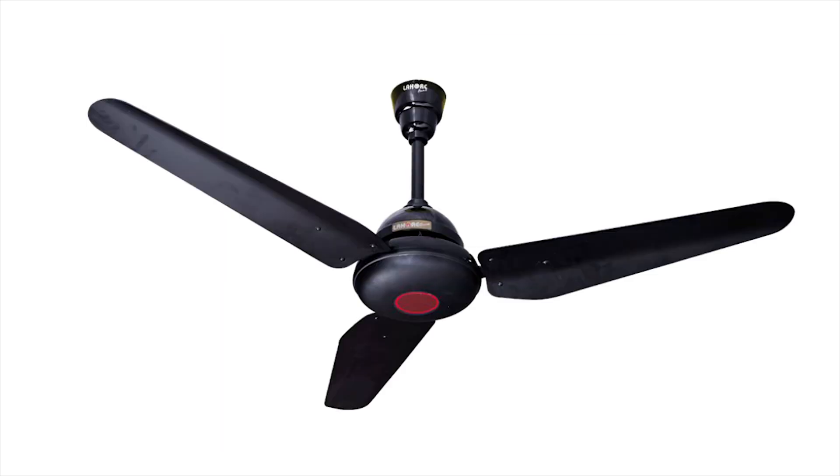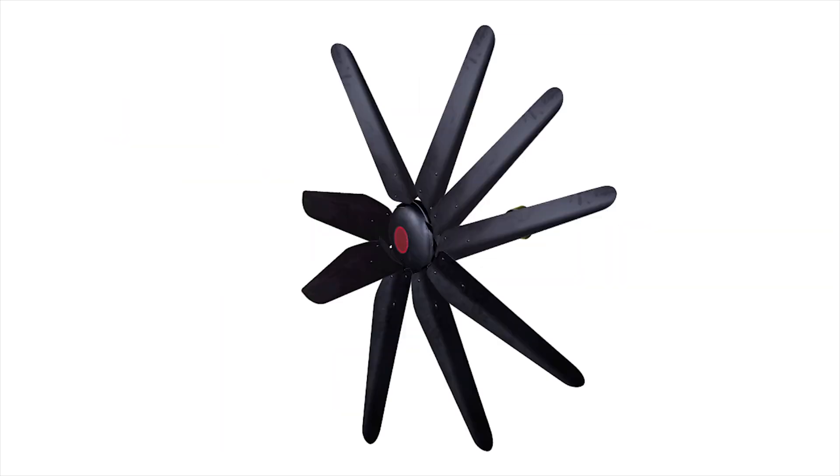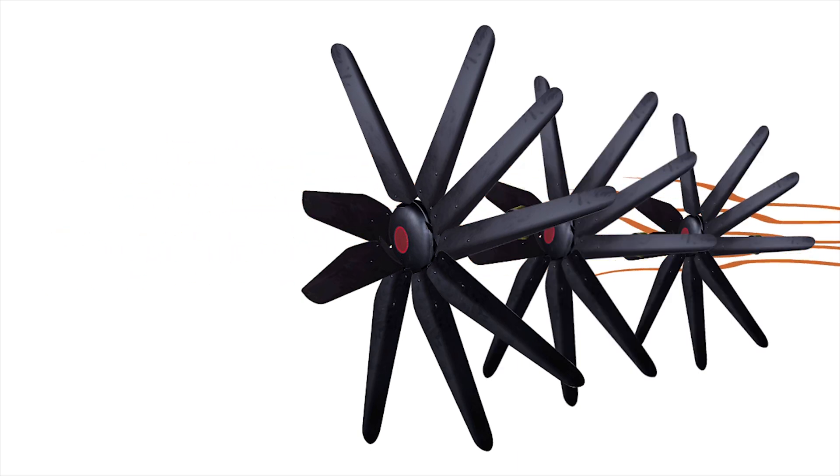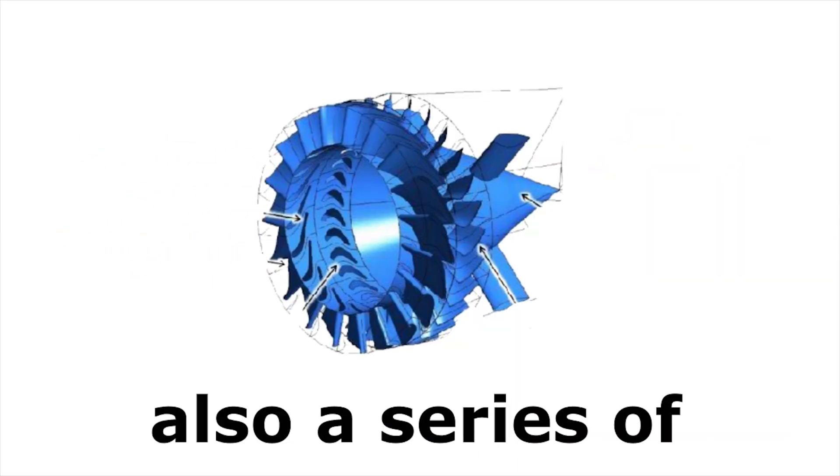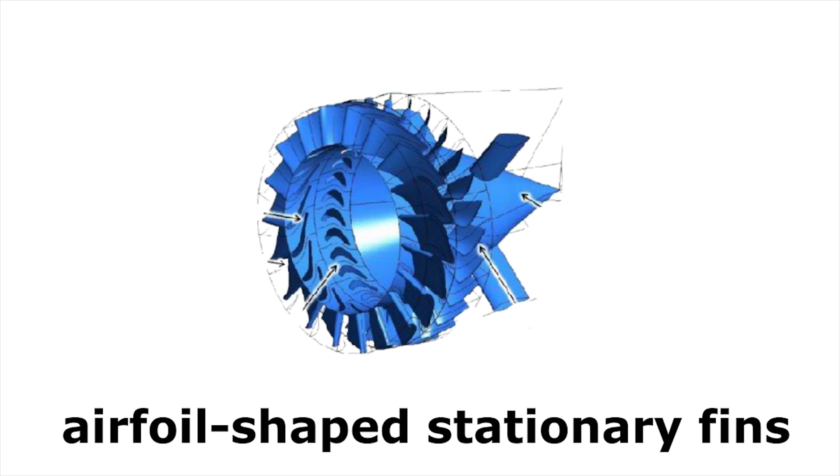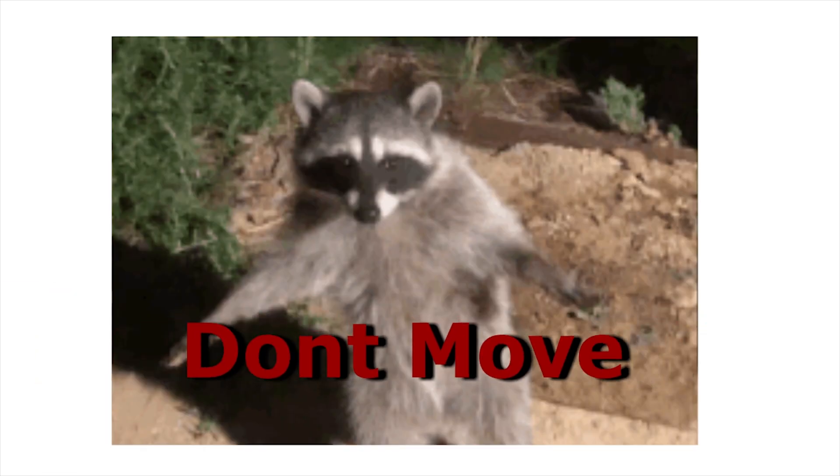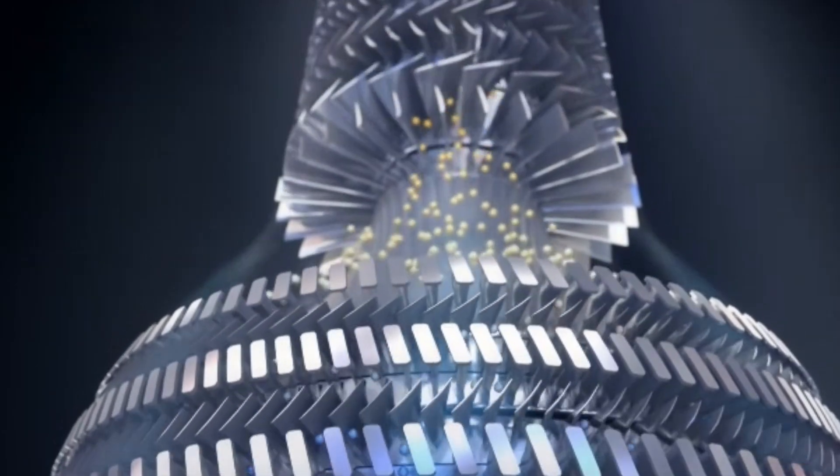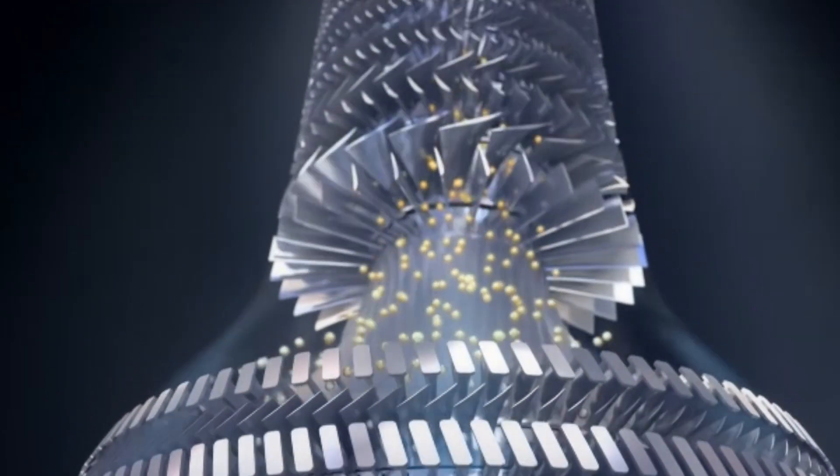You can think of the compressor like a normal house fan, only it's a series of fans compressed together. These fans get smaller and smaller as the air progresses. In between the blades are also a series of airfoil-shaped stationary fins that do not move at all. These are called stator blades. Together, the rotating blades and stator blades squeeze and compress the air as it moves through them.